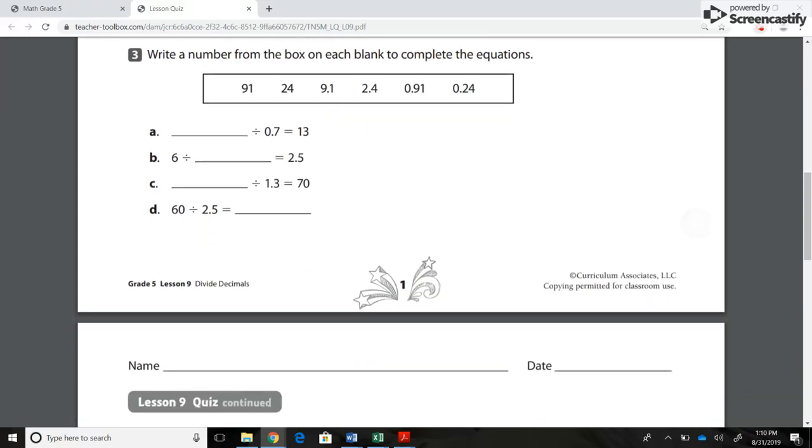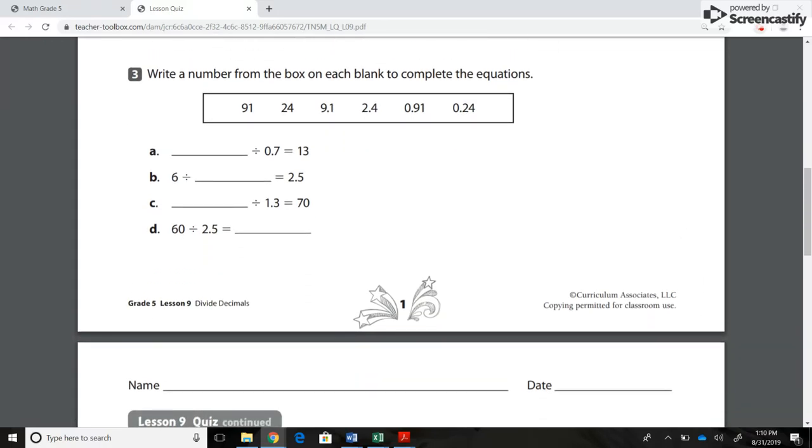Number 3. Write a number from the box on each blank to complete the equations. A. Blank divided by 0.7 equals 13. B. 6 divided by blank equals 2.5. C. Blank divided by 1.3 equals 70. D. 60 divided by 2.5 equals blank.